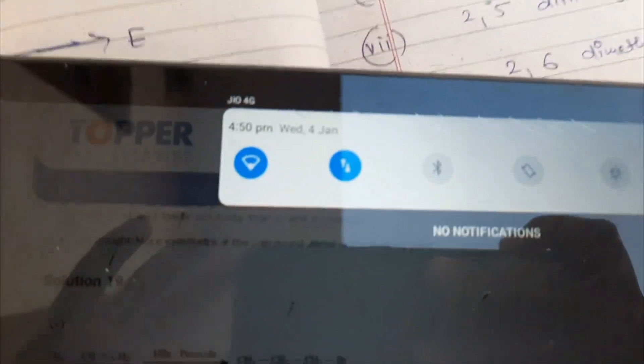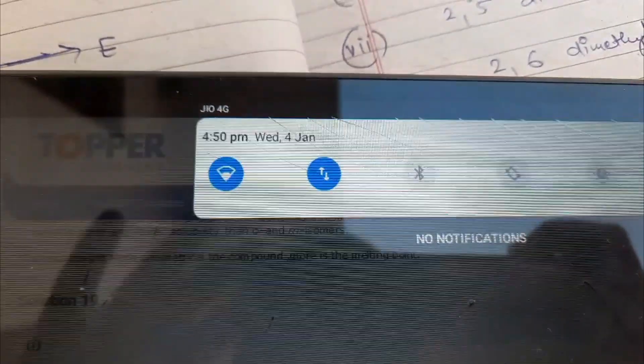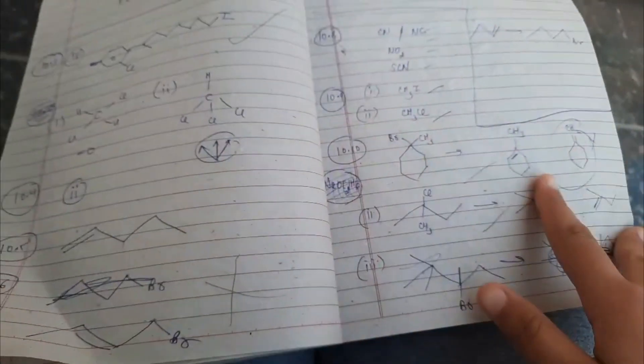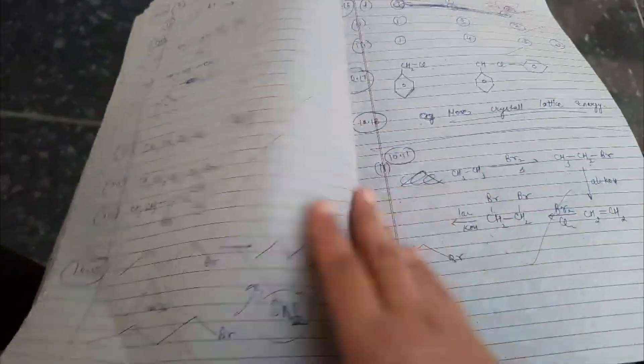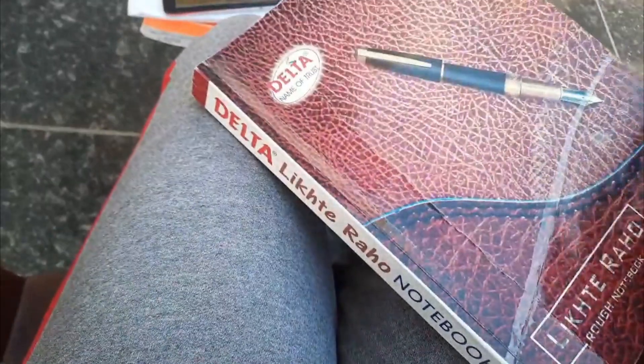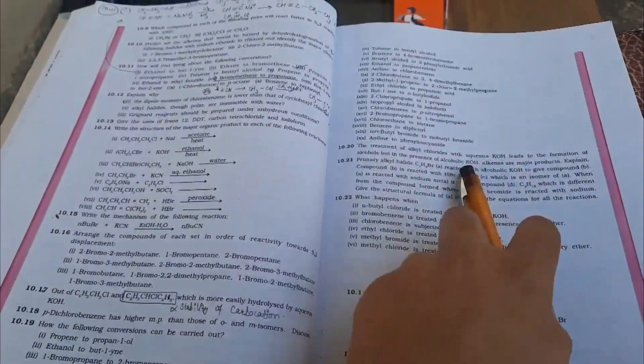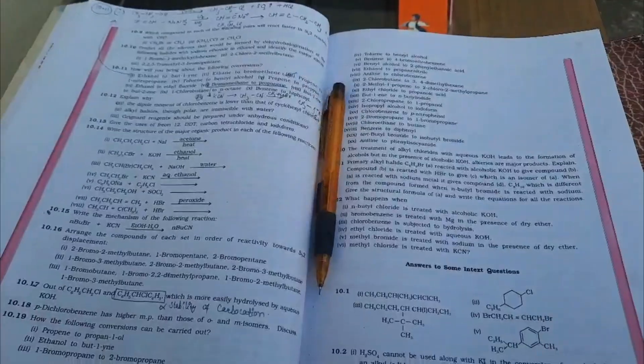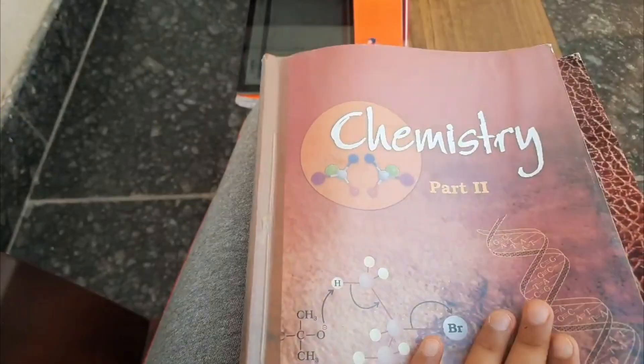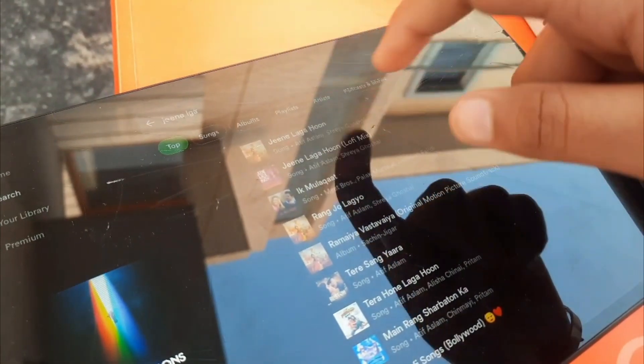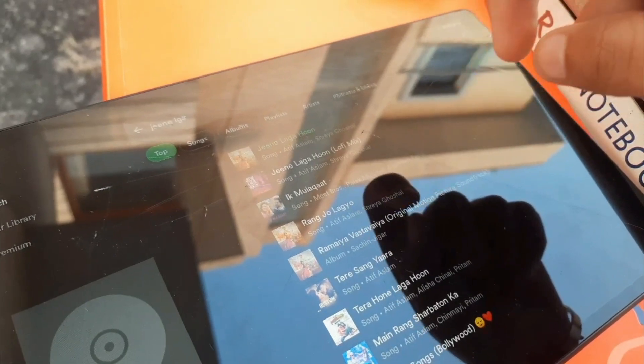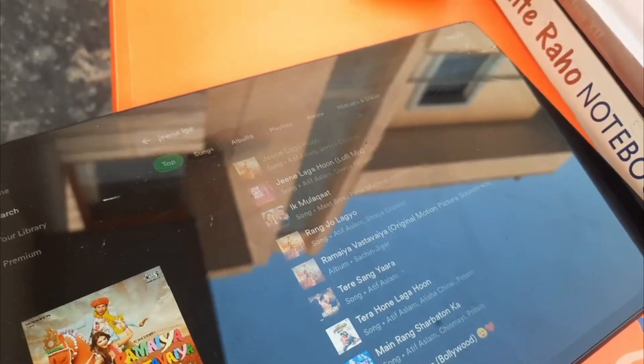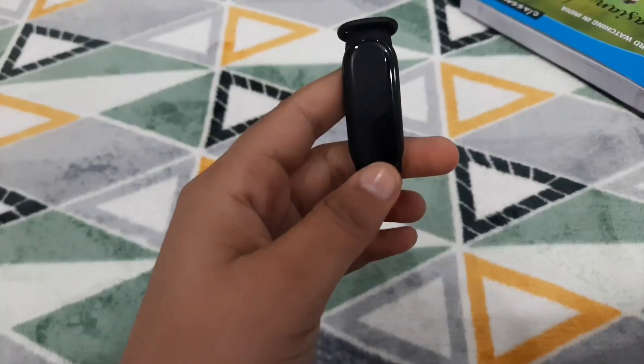Now it's around 4:50 and I'm done with chemistry - solved around 20 to 25 questions. Though there were sub-parts also, that's why it took me a lot of time. There were a lot of questions that I was not able to solve but I still am feeling happy. Now I will listen to some music, I will refresh my mind, I will walk for some time.